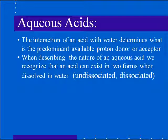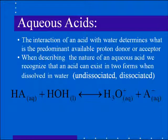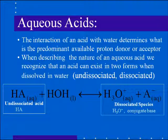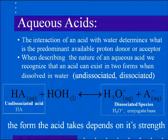When we dissolve an acid in water, the aqueous solution it forms contains two different species: the undissociated form of the acid and its dissociated form. We represent any acid with the symbol HA. When dissolved in water, HA reacts with the first available water molecule HOH to produce hydronium ions and the balancing species A⁻. Whether the acid remains as HA or becomes H₃O⁺ and A⁻ depends on its strength.